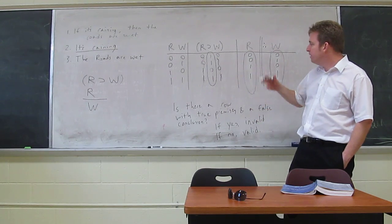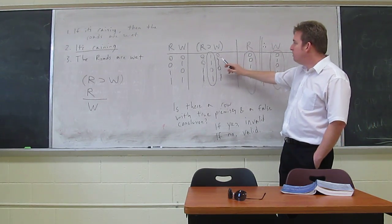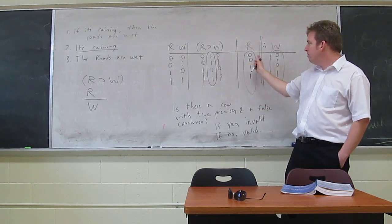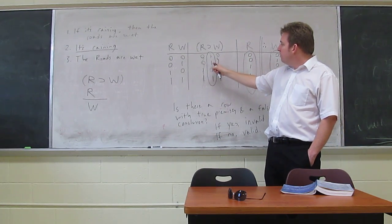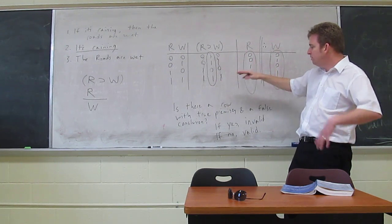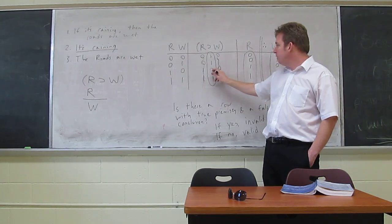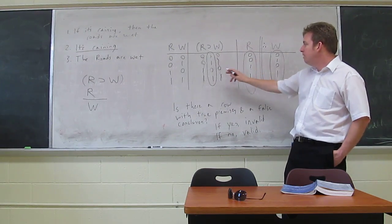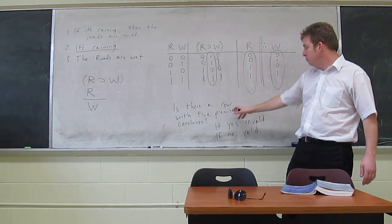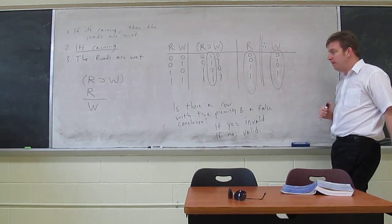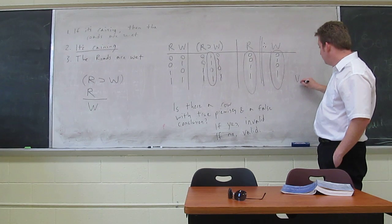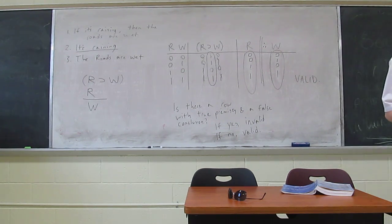Let's check. The first row has a true premise and a false premise, so it's not a row with all true premises — irrelevant. The second line also has a false premise, so irrelevant. The third line has a false premise as well — throws it out. The final line does have true premises and it's relevant. Is the conclusion false? No — the conclusion is true. There's no case where the premises are true and the conclusion is false, so this argument is valid.